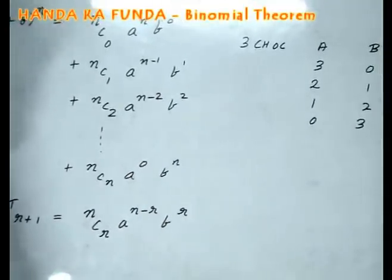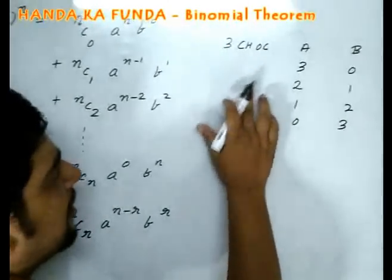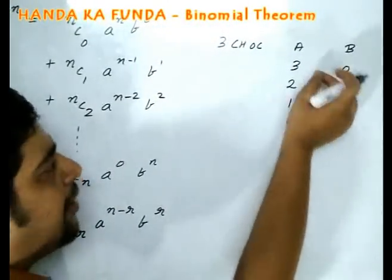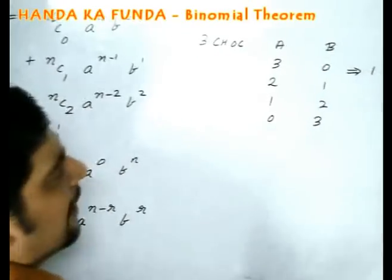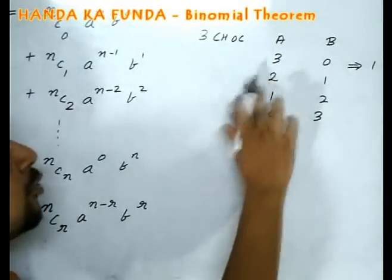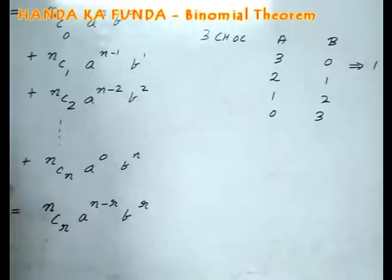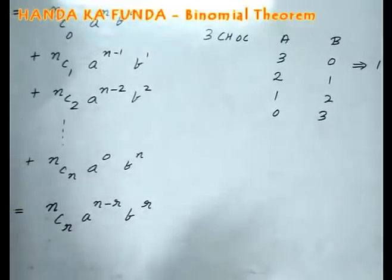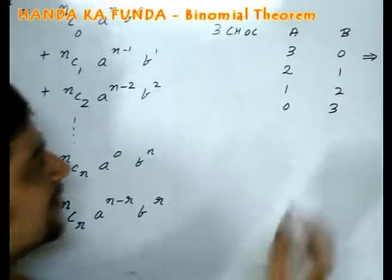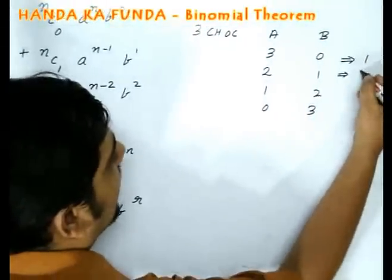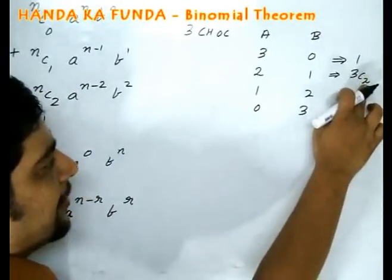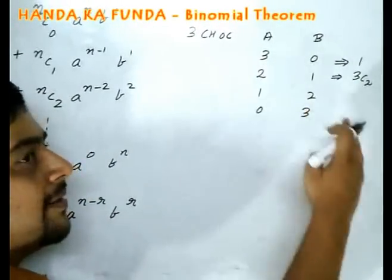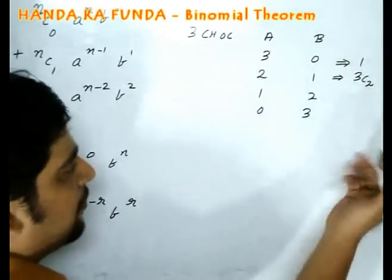There are other issues to look at as well. Say for example, if it is 3 chocolates and all 3 of them are going to a, that is possible one way. But if 2 chocolates are going to a, then you need to make another decision: which 2 chocolates are going to a. So that you can decide in 3C2 ways. From the 3 chocolates, I will select the 2 chocolates to give to a. Third one automatically goes to b.